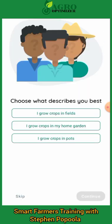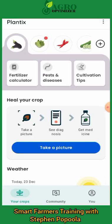It will ask what best describes you — whether you grow crops in the field or in a home garden. Select your option and your Plantix app is now ready to be used.